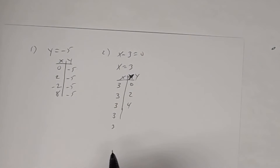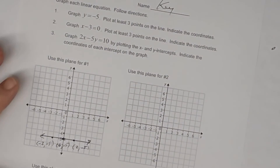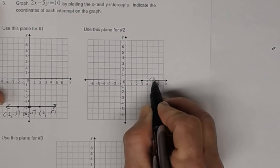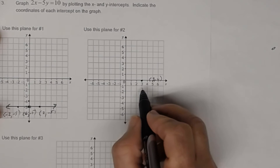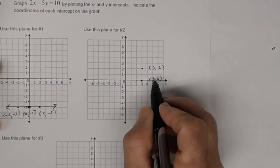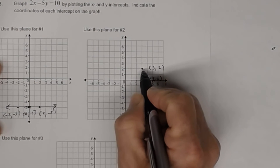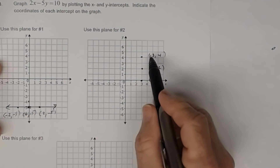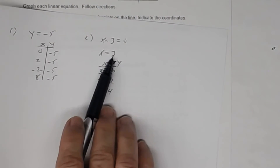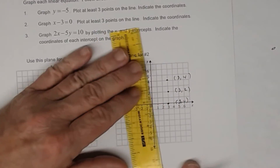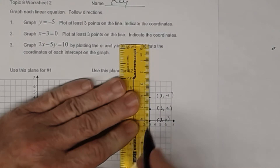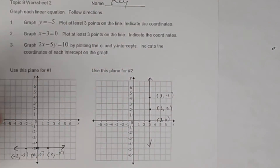So when I plot those points in the coordinate plane, I have (3, 0) which is here — label the point (3, 0). I have (3, 2) which is here, and I have (3, 4) which is here. Notice that all these x-coordinates are 3s, and that's what this indicates — x has to be 3. So when you graph it, you're going to get a vertical line. So that's number 2.